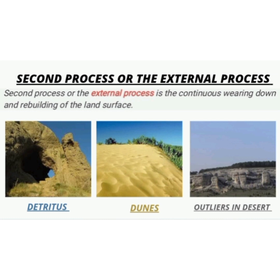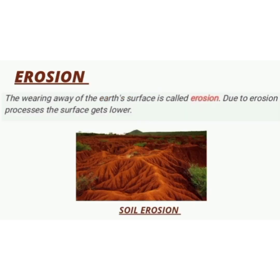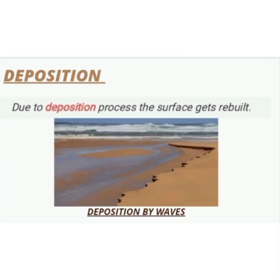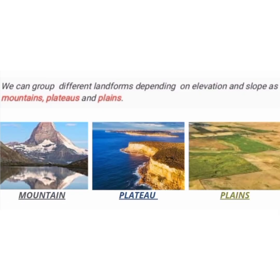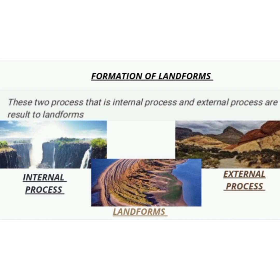The second process, or the external process, is a continuous wearing down and rebuilding of the land surface. The wearing away of the earth's surface is called erosion. When erosion takes place, the surface gets lowered. And due to the deposition process, the surface gets rebuilt. These two processes are carried out by running water, ice and wind. We can group different landforms depending on elevation and slopes as mountains, plateaus and plains.